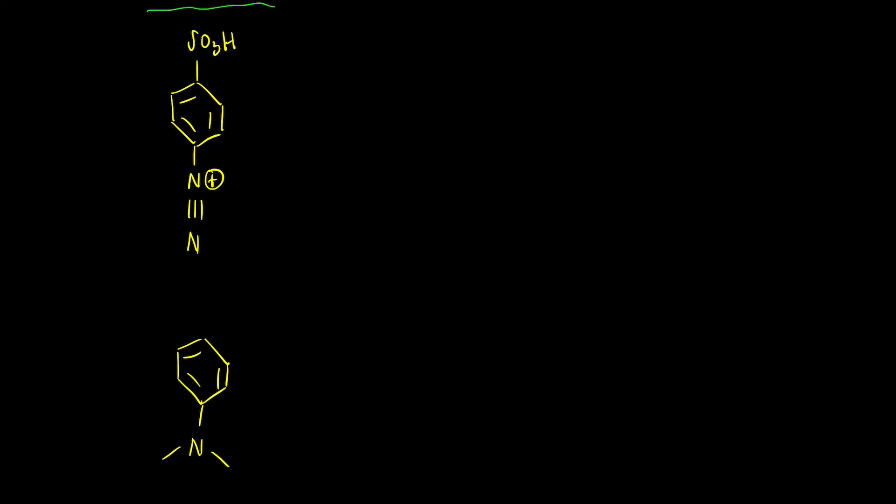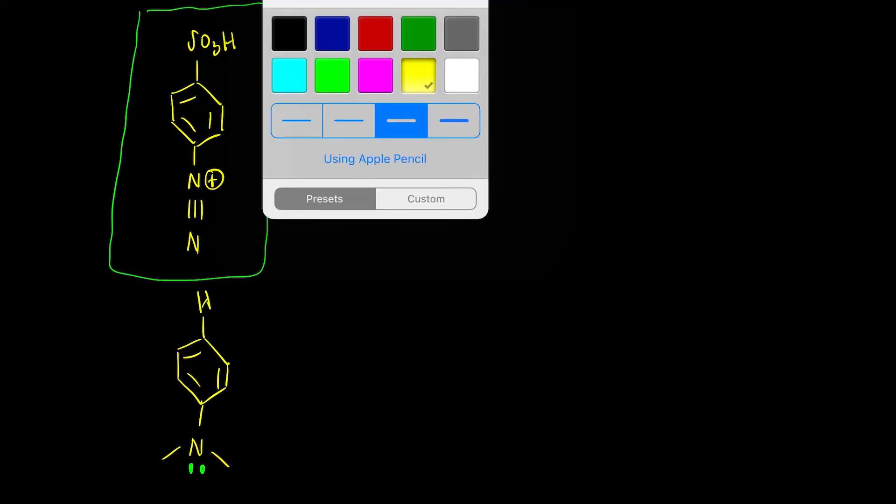Now the electrophile is the diazonium. Here's the diazonium that we synthesized - it's that white solid. And then in the last step we add dimethylaniline. So let's highlight the hydrogen that we wish to replace or substitute.